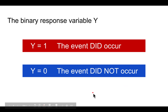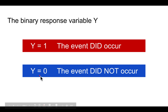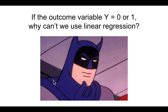When we are doing logistic regression, we model the binary response variable y as 1 if the event occurred, or 0 if the event did not occur. Now you might be thinking: if the outcome variable y is 0 or 1, why can't we just use linear regression? That's a great question.